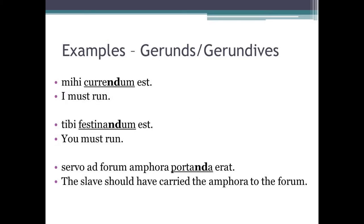Now let's have a look at a few examples of gerundive and gerund constructions. 'Mihi currendum est' — I must run, or literally, the necessity for running is for me; but translate it more naturally as 'I must run.' 'Tibi festinandum est' — you must hurry. 'Servo ad forum amphora portanda erat' — the slave should have carried the amphora to the forum. The first two sentences are gerund constructions including a dative noun — mihi and tibi — and the last sentence is a gerundive construction.